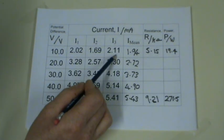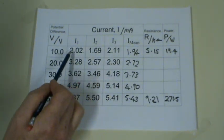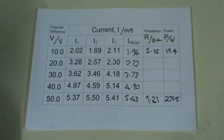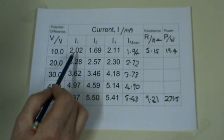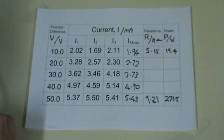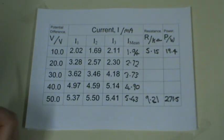We're going to look at the uncertainty in the current we've recorded here. You can see we've got a reasonably large range of 0.42 milliamps.